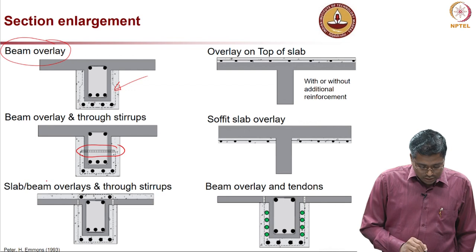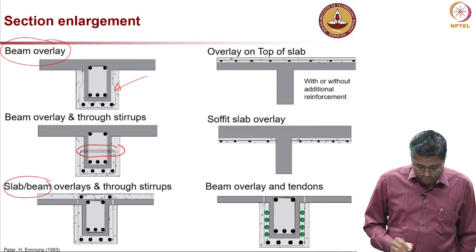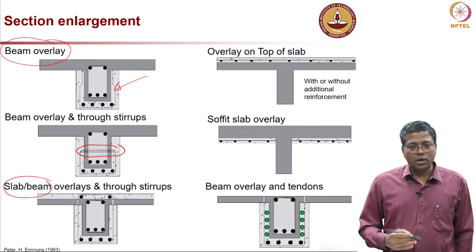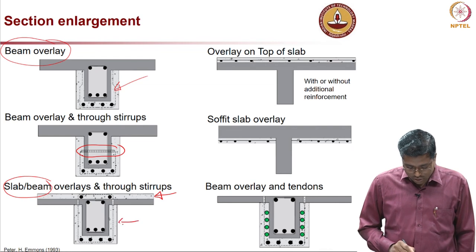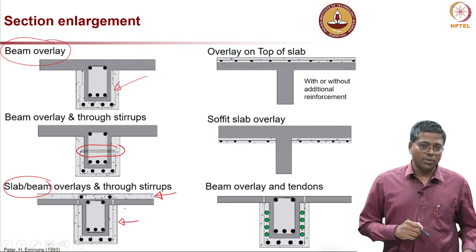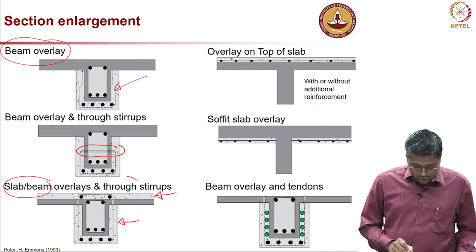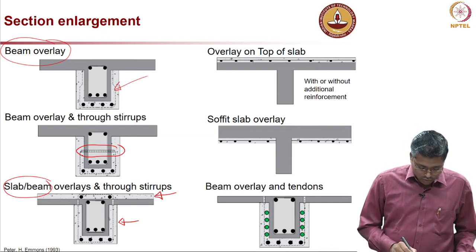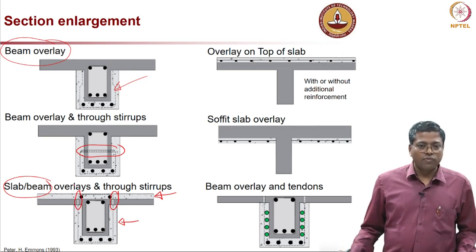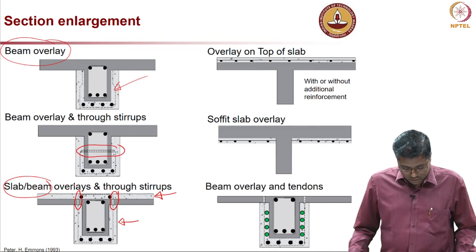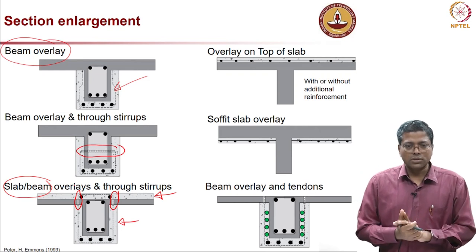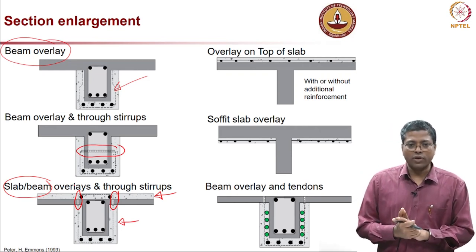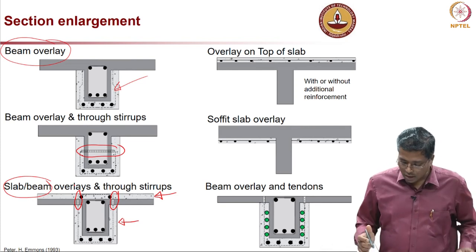A third case is slab-beam overlay where you have new concrete both on top of the slab and around the beam elements. This also uses through-stirrups, which go through the flange of the existing concrete system, so that all elements from top to bottom can function as one integral unit.